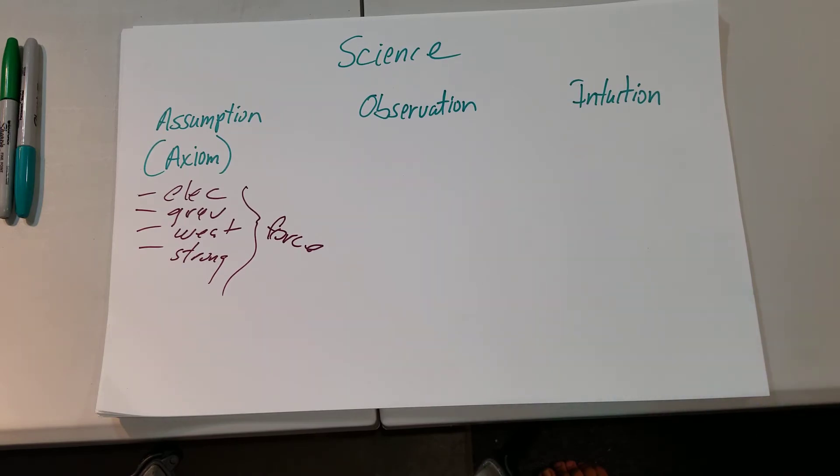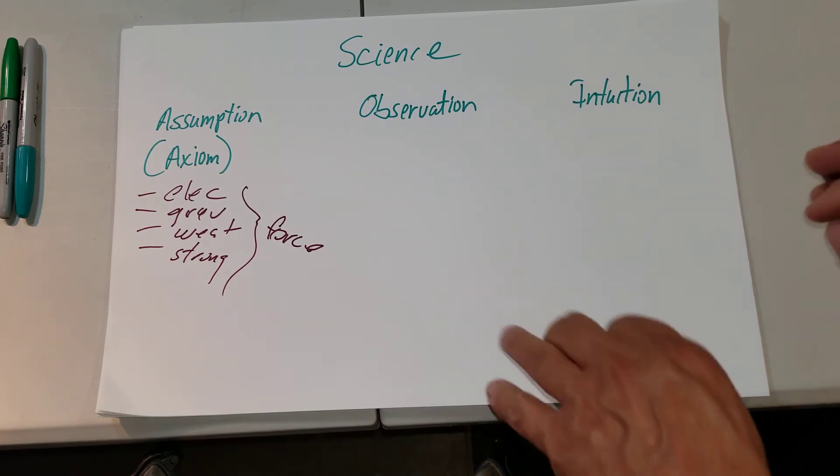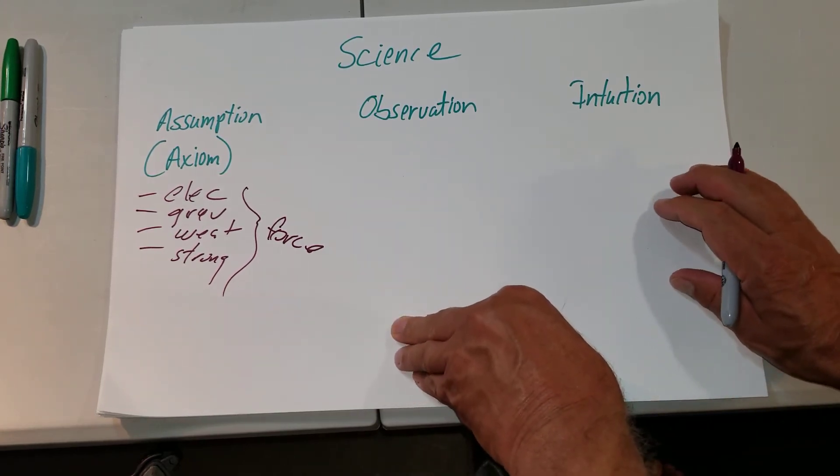There's no double-blind random research to prove that it works or doesn't work. The same with prophylactic use of hydroxychloroquine with zinc. There are observational studies that indicate it doesn't work, others indicate it does. People have intuition based on because it worked on SARS, other versions of SARS.